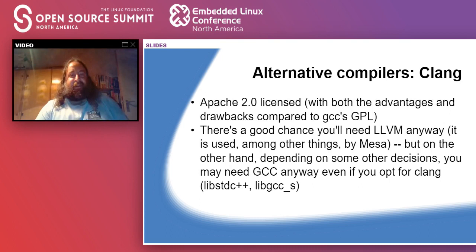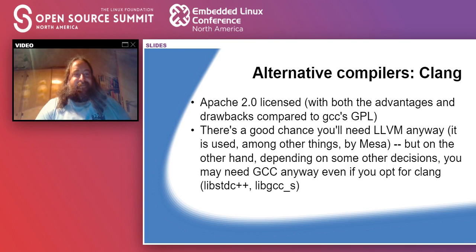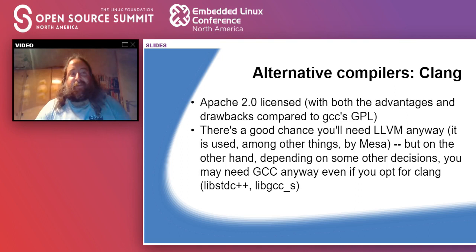Another thing that differs between the two compilers is the license. gcc is GPL; clang is Apache 2.0, which essentially means do whatever you like except say you wrote it. That has both advantages and drawbacks. I personally prefer the GPL option because it makes people contribute back, but if you're doing something very specific and just don't want to bother releasing code, you might opt for the Apache-licensed one. In terms of the compiler itself, that really shouldn't be a primary consideration — they are both open, they are both good, pick whatever works better.